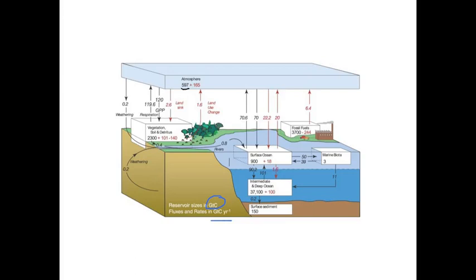The black numbers are before humans started messing with it, and a number like this one up here is how much carbon was in the atmosphere before human influence. The red number up here is how much humans have added to the atmosphere.